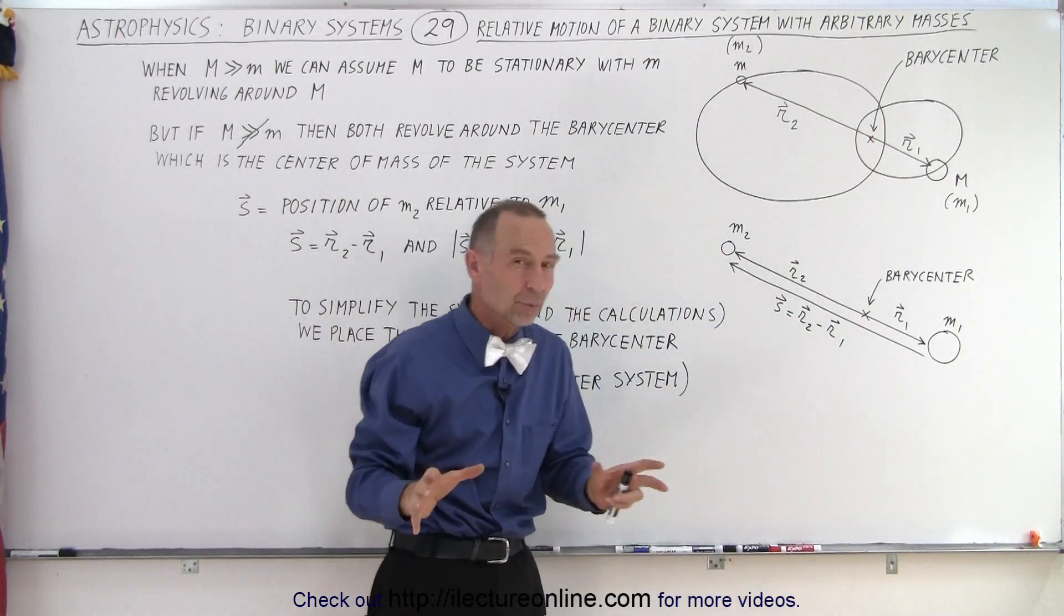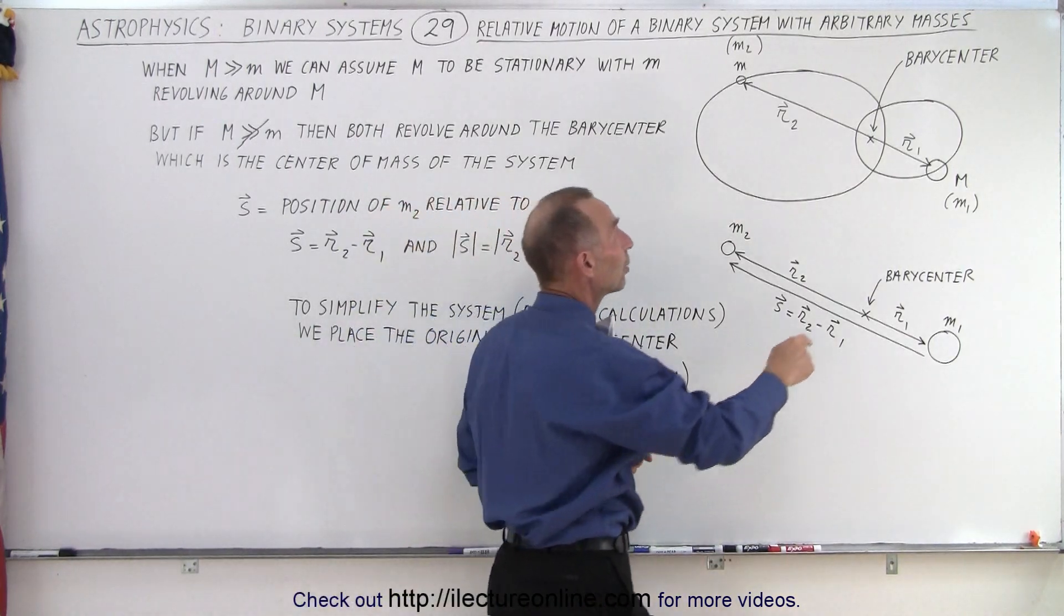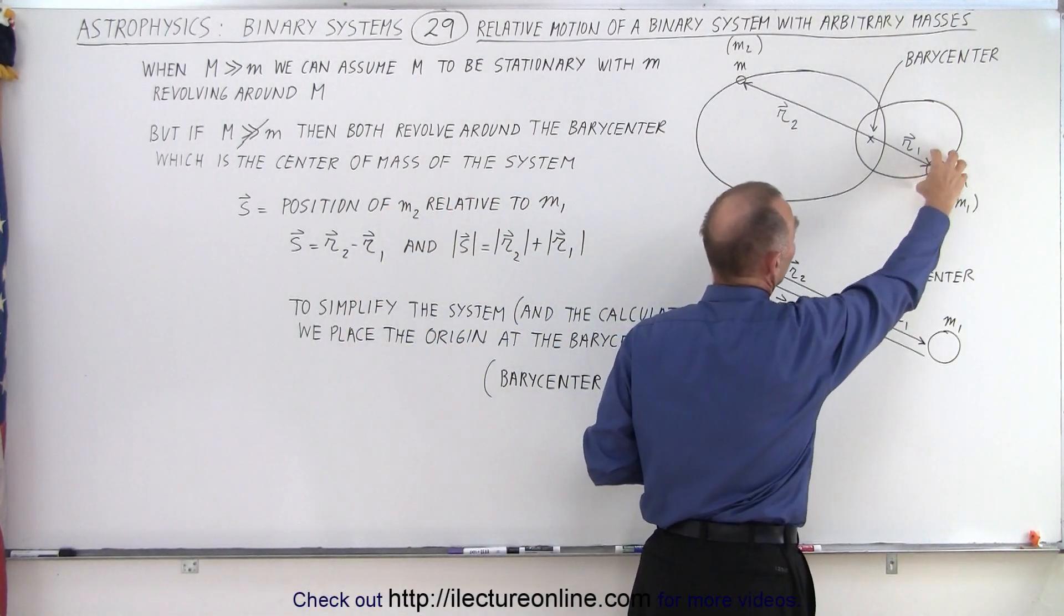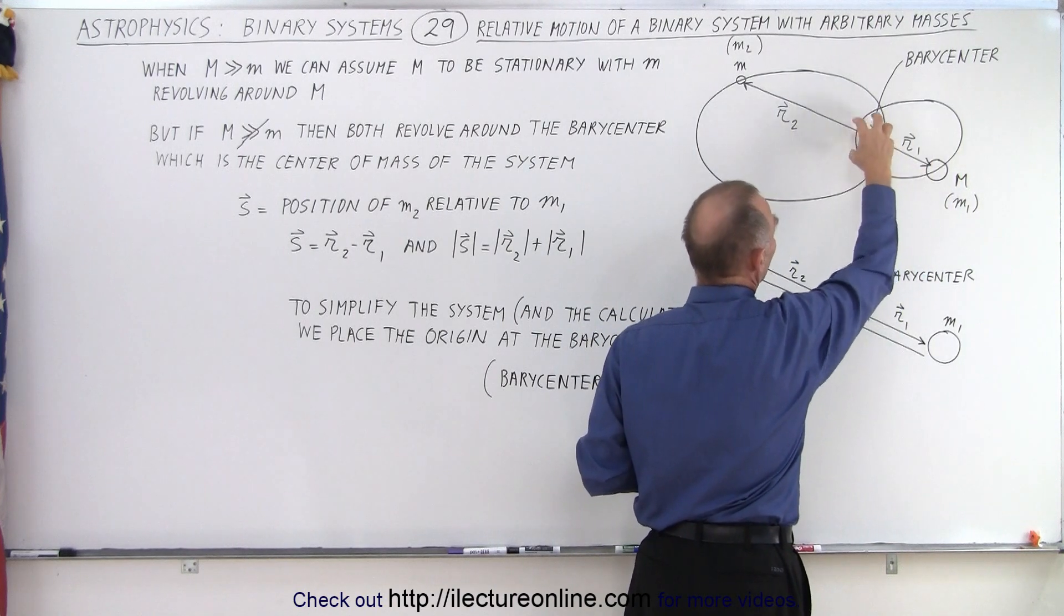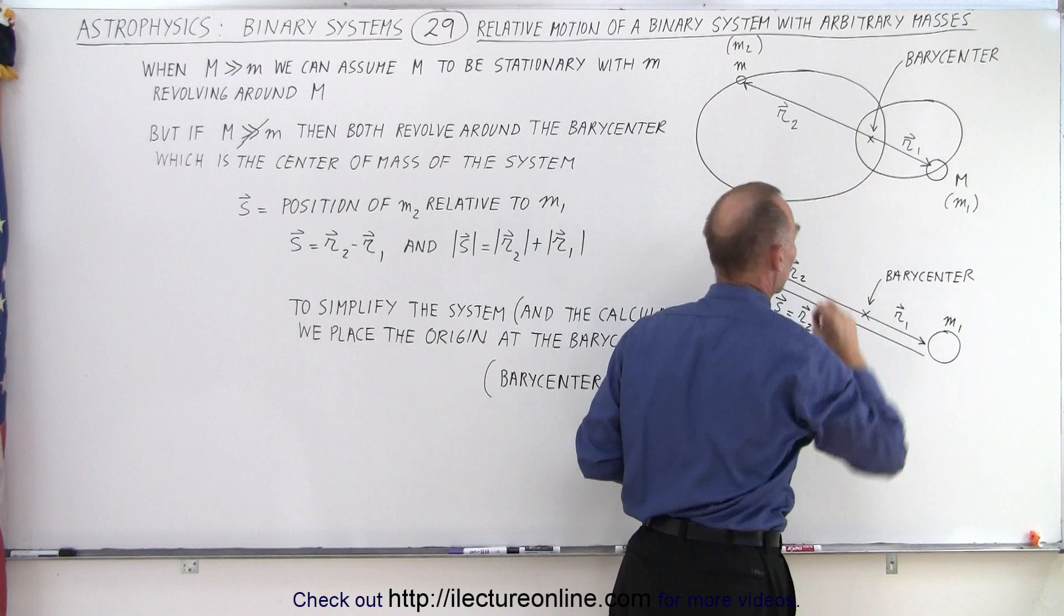Notice again in the case where the large object is much, much greater than the small object, we can assume that R1 goes to zero, that the large object is at the barycenter, and the small object just goes around that stationary large object.